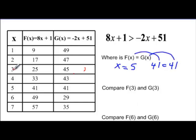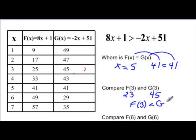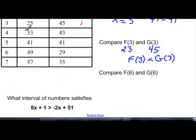f of 3, remember we come to 3 in the x and f of 3 is going to be 25. And g of 3 is going to be 45. So we would say f of 3 is less than g of 3. And when I look at f of 6 I see that f of 6 is 49 and g of 6 is 29. So f of 6 is bigger or greater than g of 6.